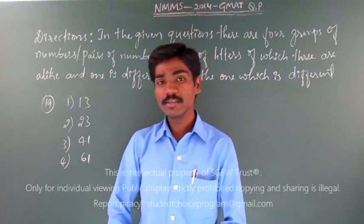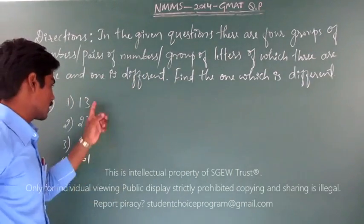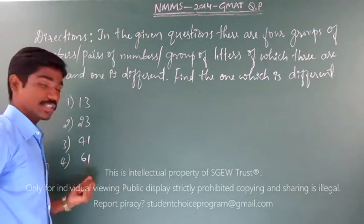Well friends, here is problem number 19. Let us see. The problem contains four numbers: 13, 23, 41, and 61.